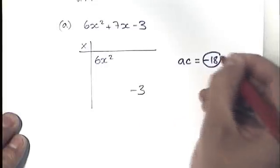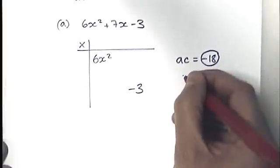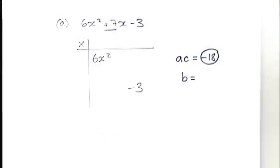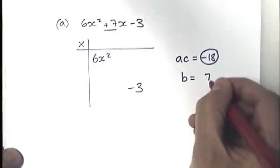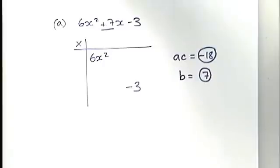Multiply them together, you get minus 18. You'll see why we do that in a minute. Then you want to write down the value of b. Remember, go back to your original expression. The value of b is 7.